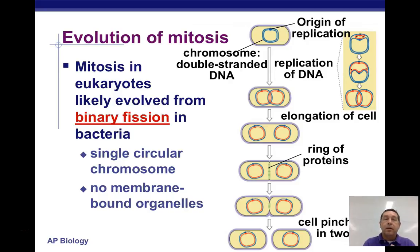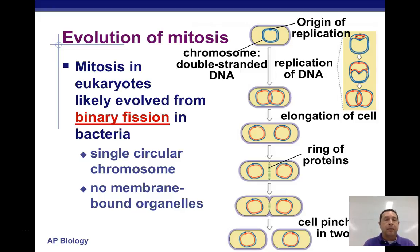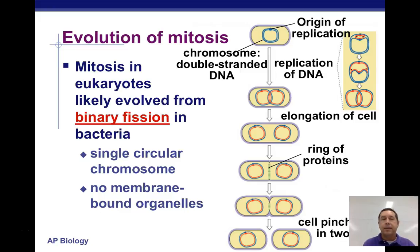In this video we're going to talk about the evolution of mitosis, or cell division — how did mitosis come to be? Mitosis in eukaryotes likely evolved from a process that happens in bacteria called binary fission, and binary fission is a much simpler process.